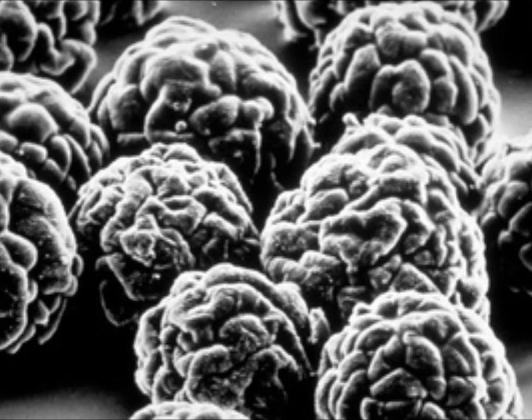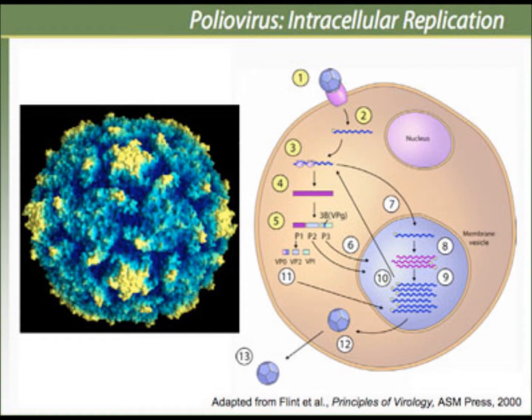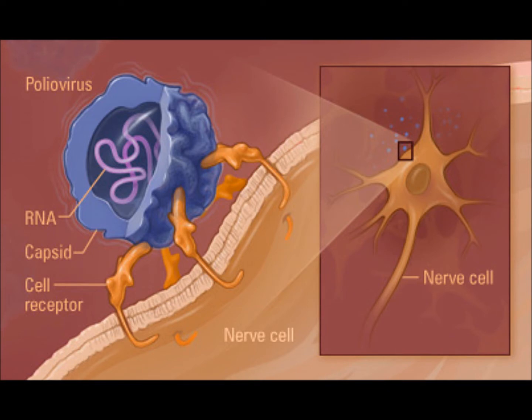Polio virus is the causative agent of poliomyelitis. It lives in an infected person's throat and intestines. Poliomyelitis occurs when the virus invades the nervous system and attacks nerves that activate muscle movement.